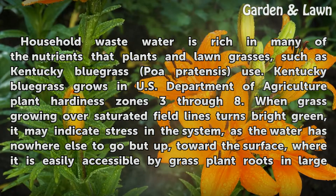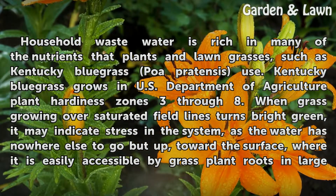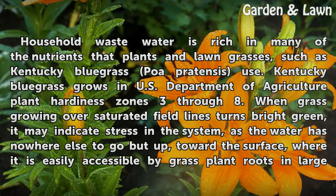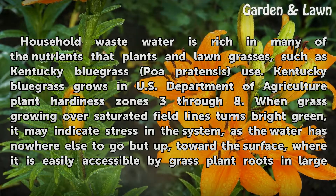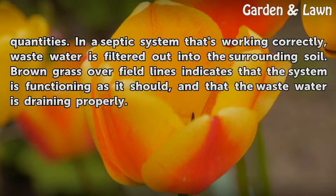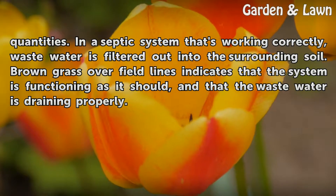Household wastewater is rich in many of the nutrients that plants and long grasses such as Kentucky bluegrass (Poa pratensis) use. Kentucky bluegrass grows in USDA plant hardiness zones three through eight. When grass growing over saturated field lines turns bright green, it may indicate stress in the system, as the water has nowhere else to go but up toward the surface where it is easily accessible by grass roots. In a septic system that's working correctly, wastewater is filtered out into the surrounding soil. Brown grass over field lines indicates that the system is functioning as it should and that the wastewater is draining properly.